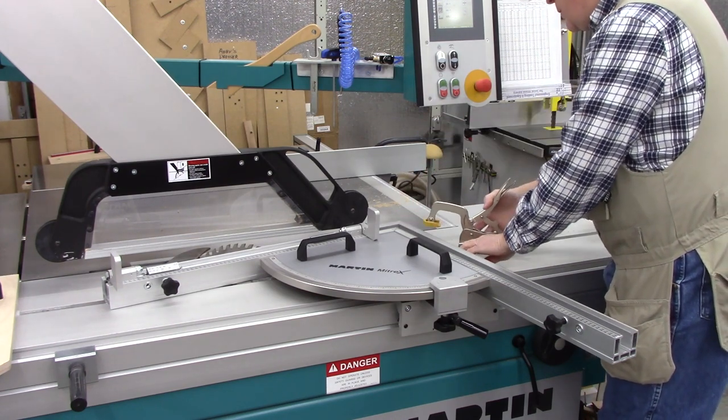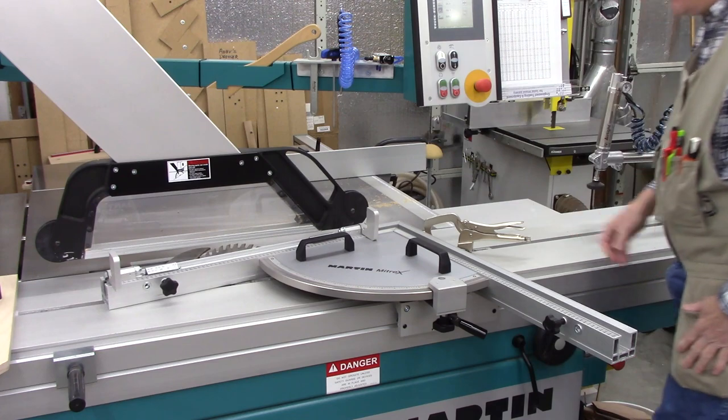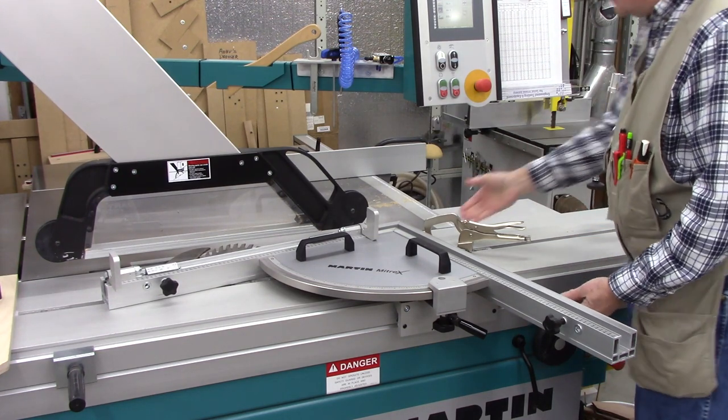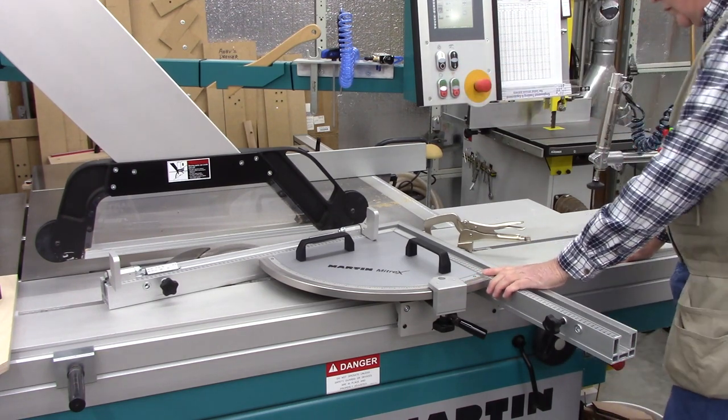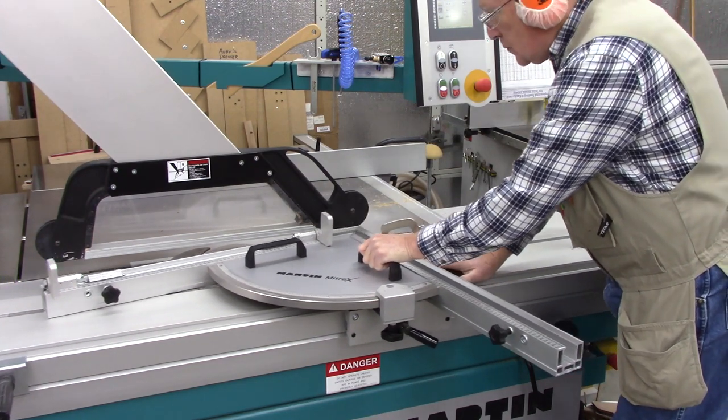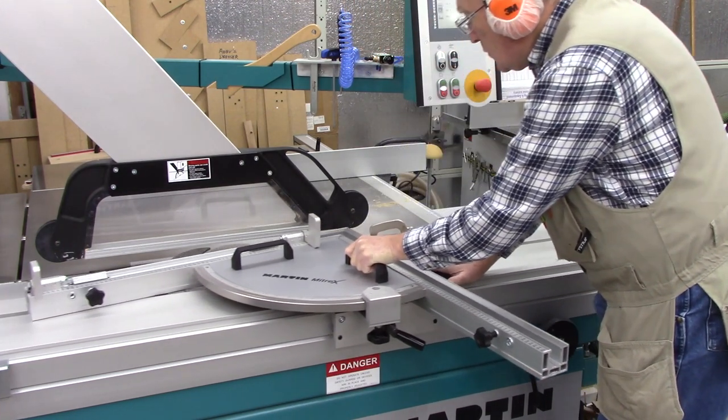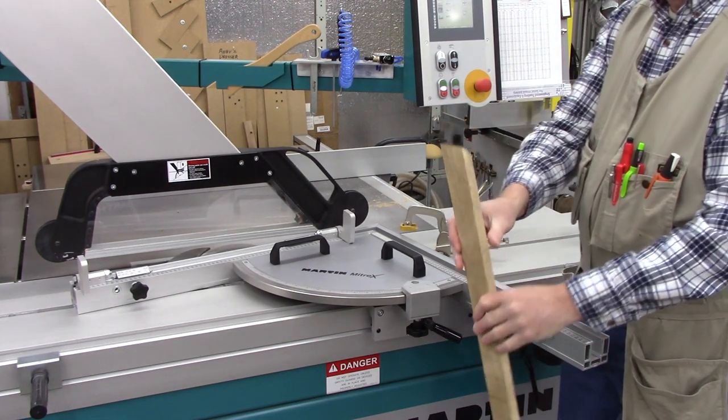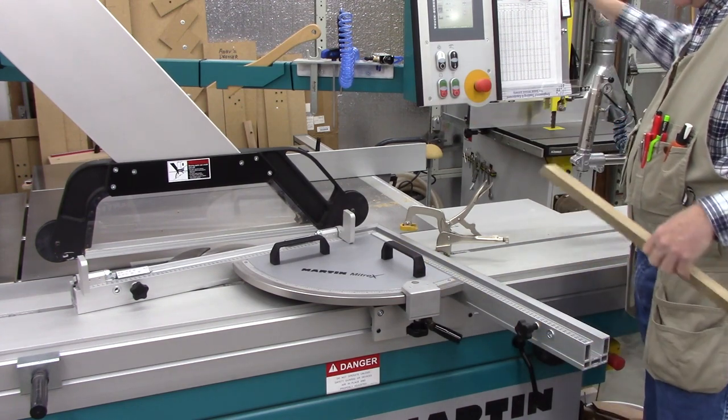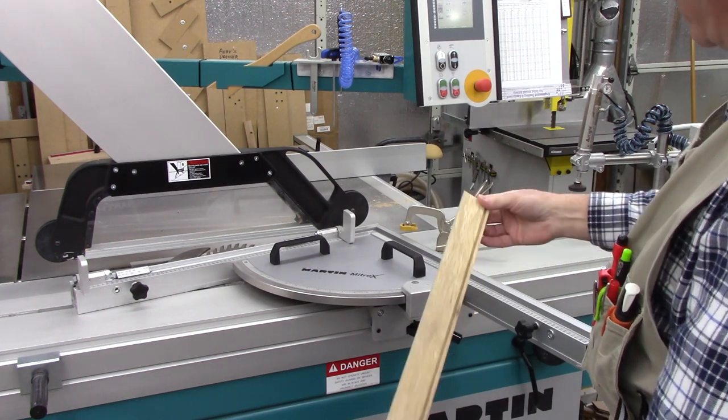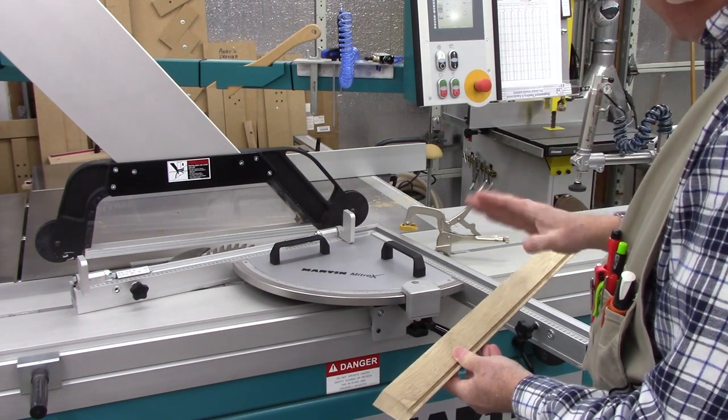I've got my first compound miter cut. Now I want to make the opposing cut. I'll make that on the opposite side, but I need - I can't do it this way because my angles will be wrong, so I need to pivot my fence around and make the cut on the opposite side.